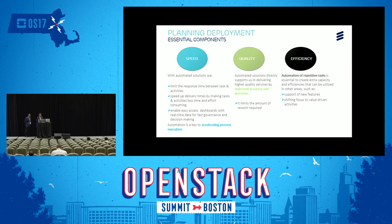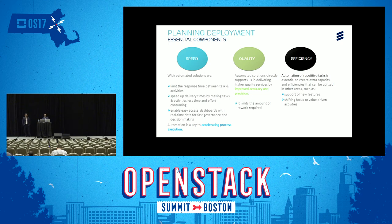Now that we have done the pre-analysis and identified the baseline, the next step is to deploy those changes — deploy the known state delta. Since our environment is huge with hundreds of compute nodes and multiple sites, we have to do rollouts in a manner that is very speedy while delivering quality service with full efficiency. By automating the solution, we cover all three factors: speed, quality, and efficiency. Automation helps limit the response time between tasks and activities.